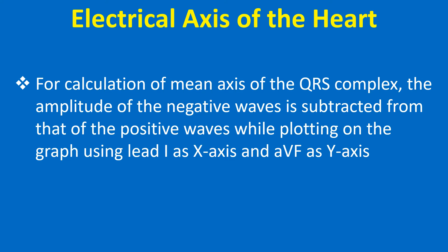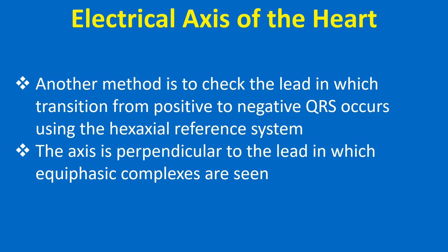For calculation of the mean axis of the QRS complex, the amplitude of the negative waves is subtracted from that of the positive waves while plotting on the graph, using lead 1 as the x-axis and AVF as the y-axis. Another method is to check the lead in which transition from positive to negative QRS occurs using the hexaxial reference system. The axis is perpendicular to the lead in which equiphasic complexes are seen.